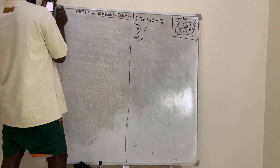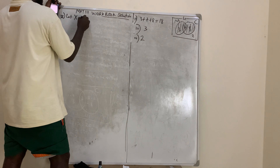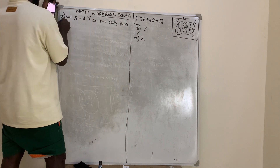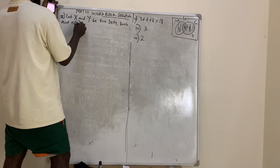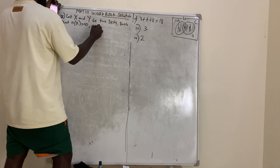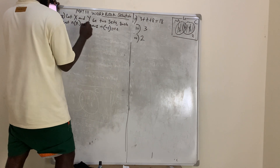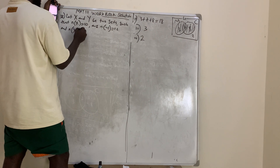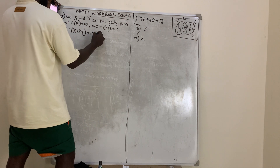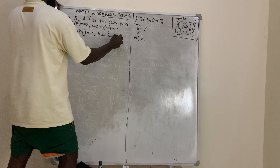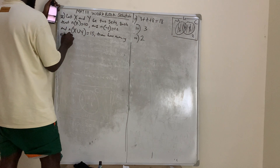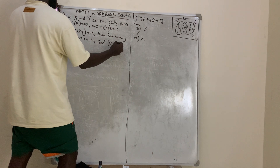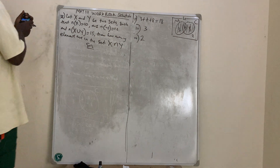Question number 38: Let X and Y be two sets such that the number of elements in X is equal to 10, the number of elements in Y is equal to 12, and the number of elements in X union Y is equal to 15. How many elements are in the set X intersection Y? This is a very simple question.